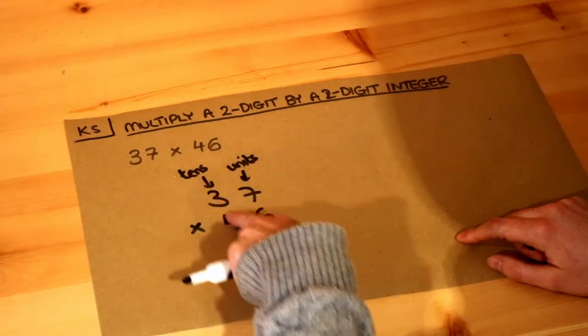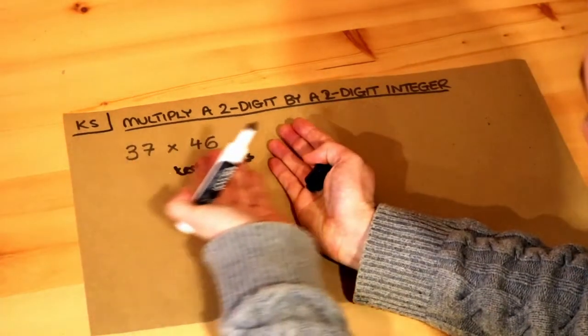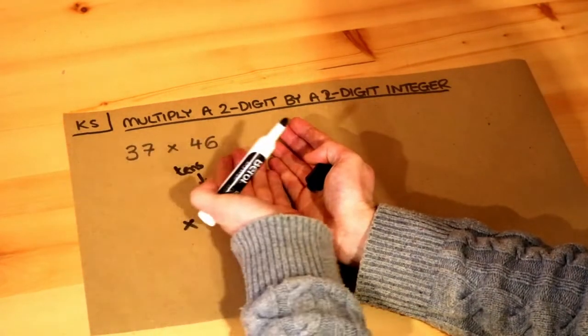Make sure your tens digits are lined up and your units digits are lined up—it's right-aligned, pushing the numbers against my right hand here.